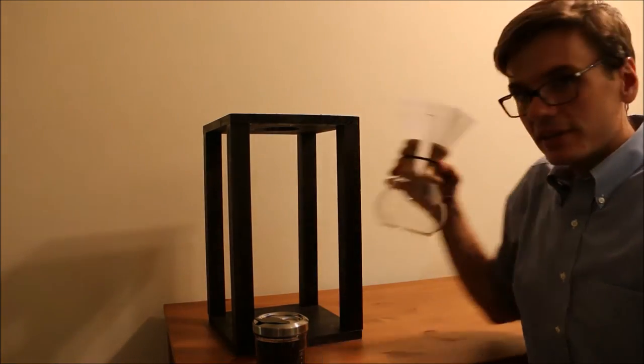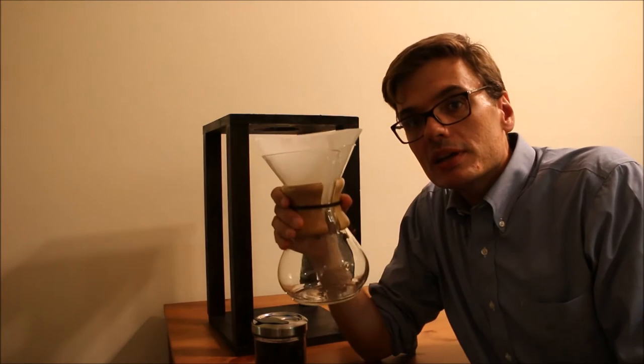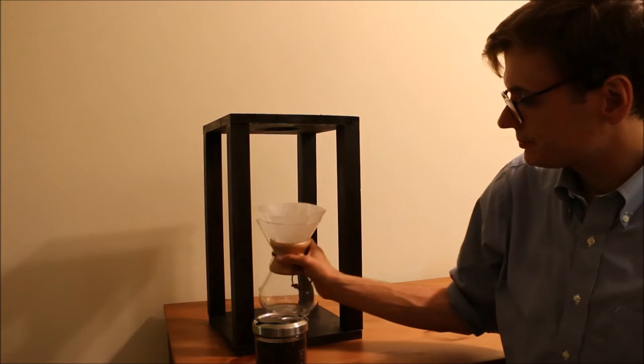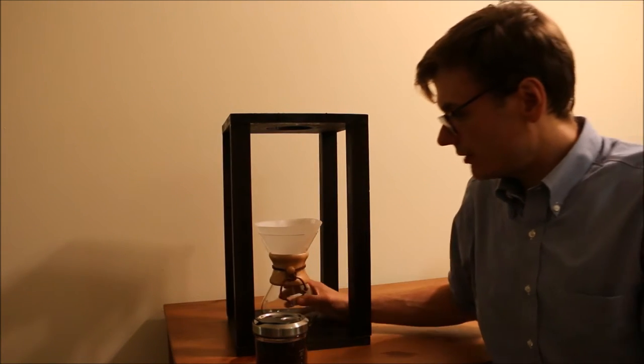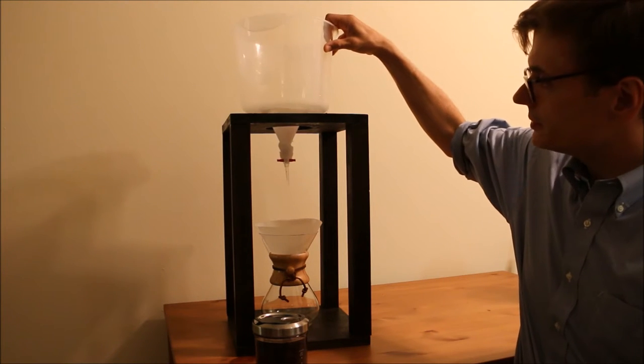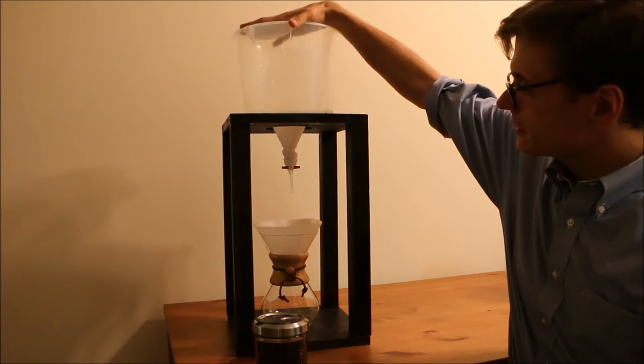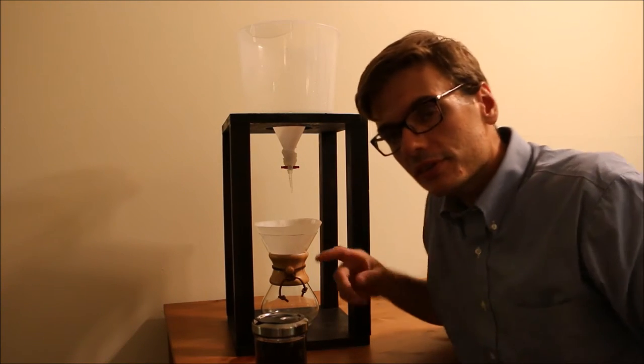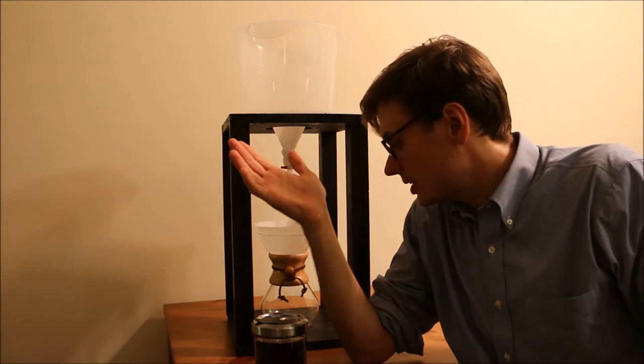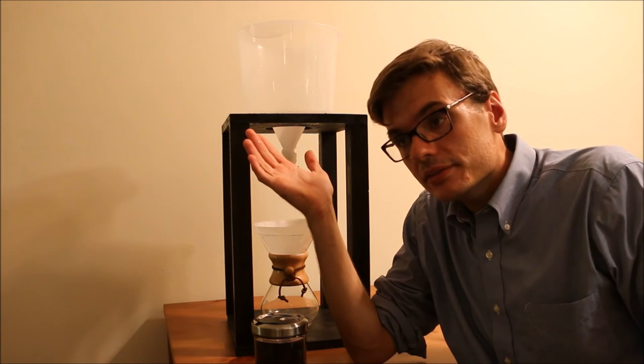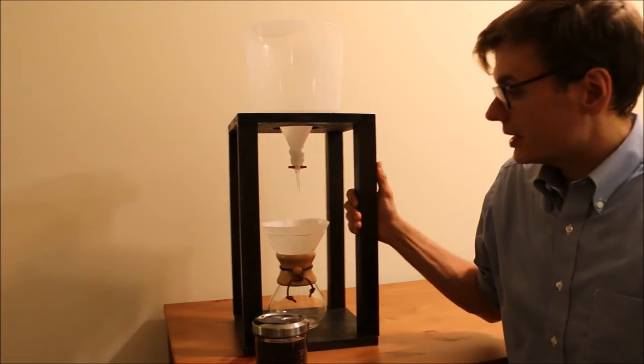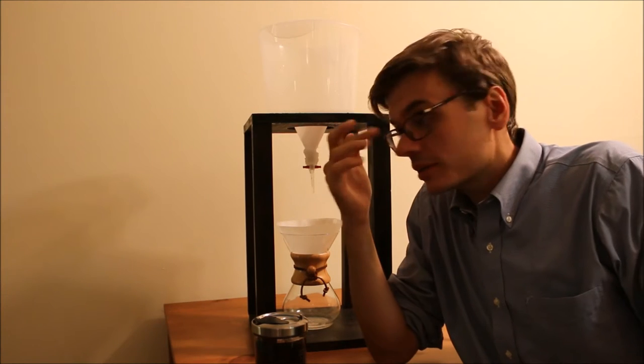So anyway, and then the last part is a six cup Chemex. We got this for like 35 bucks at our local coffee shop. So obviously, unlike the Yama Tower, it doesn't have the spirally thing at the bottom, the glass, and it's not glass, it's plastic. But I saved about 160 bucks, so it is what it is. And I've run through this once, and it does work.